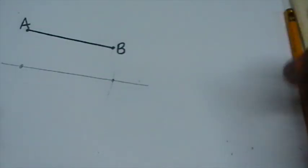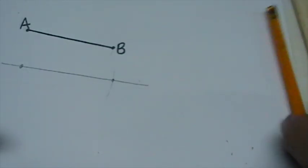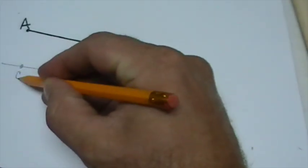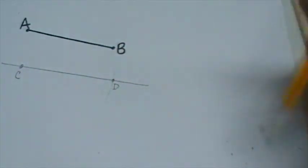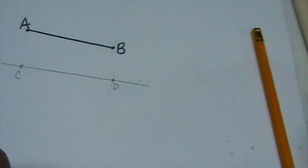And we have a congruent line segment. We can name our new points C and D.